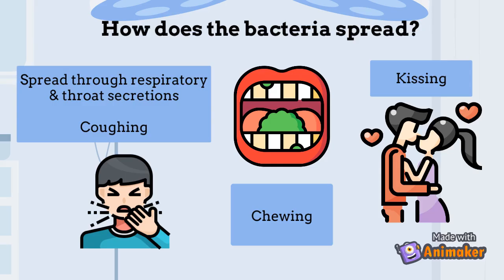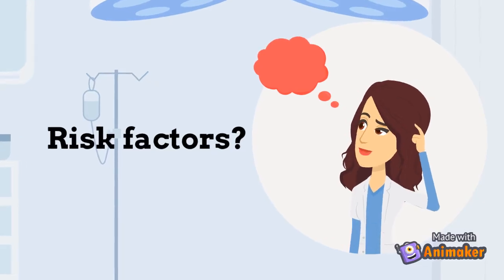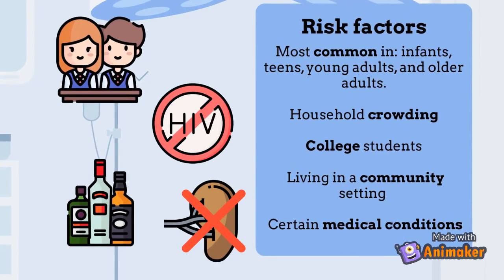You cannot catch this bacteria through casual contact or by breathing air in which someone with the disease has been in. What may be the risk factors that increase your likelihood of contracting the disease? Meningococcal disease is mostly common in infants, teens, young adults, and older adults. Particularly, those in the same household or those who have been in contact with the infected individual's oral secretions are at a higher risk. College students also have a higher risk due to their exposure to larger group settings, as living in a community setting increases risk since the bacteria may spread through the respiratory route quickly through large groups.